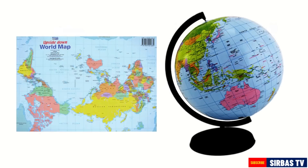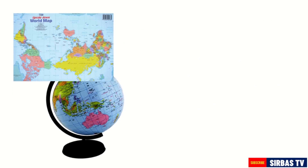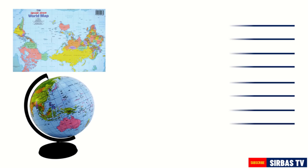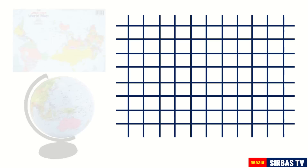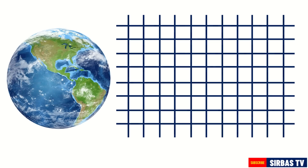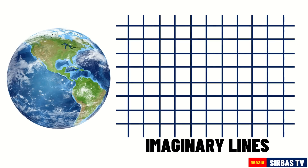Observe the map and the globe. What do they share in common? You are right! Both the map and the globe are made of horizontal lines and vertical lines which intersect with each other. We cannot really see these lines on the surface of the Earth. Hence, they are called imaginary lines. These imaginary lines are very important in locating places on Earth.